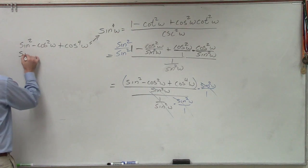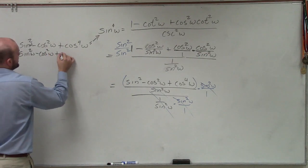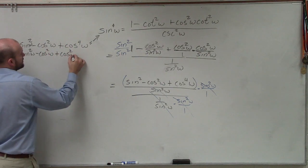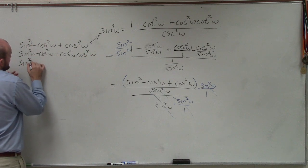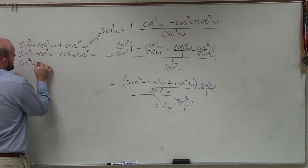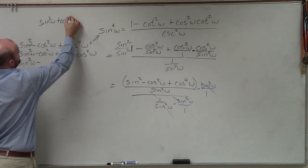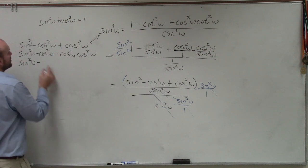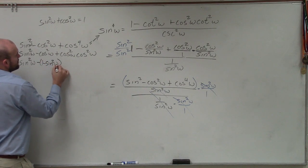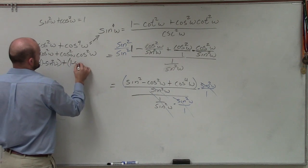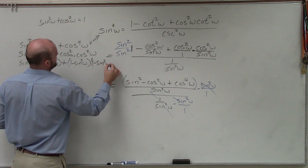To rewrite cosine to the fourth, I'm going to write sine squared of w minus cosine squared of w plus cosine squared of w times cosine squared of w. Now by still converting this, I have sine squared of w minus, remember my Pythagorean identity is sine squared of w plus cosine squared of w equals 1. So if I have a cosine squared, that's going to be 1 minus sine squared of w plus I'm going to have 1 minus sine squared of w times 1 minus sine squared of w.